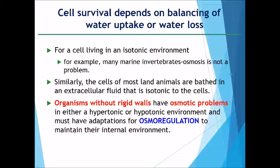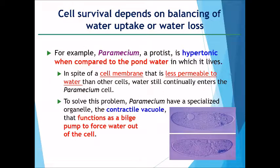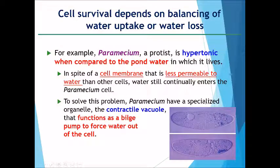For cells surviving in an isotonic environment, such as marine invertebrates, osmosis is not a problem. However, organisms without rigid walls face osmotic problems in either hypotonic or hypertonic environments and must have adaptations for osmoregulation. For example, paramecium — a protist that is hypotonic compared to its surroundings — can still have water enter its body. Paramecium has a special vacuole known as a contractile vacuole that helps to pump the water out from the cell when the water content inside becomes too much.